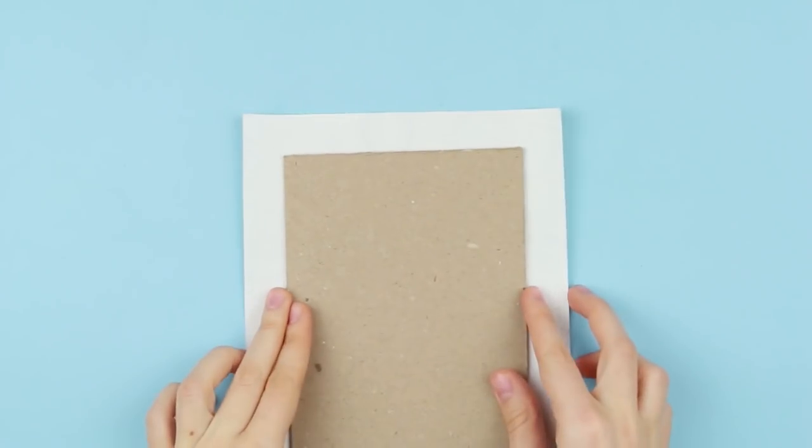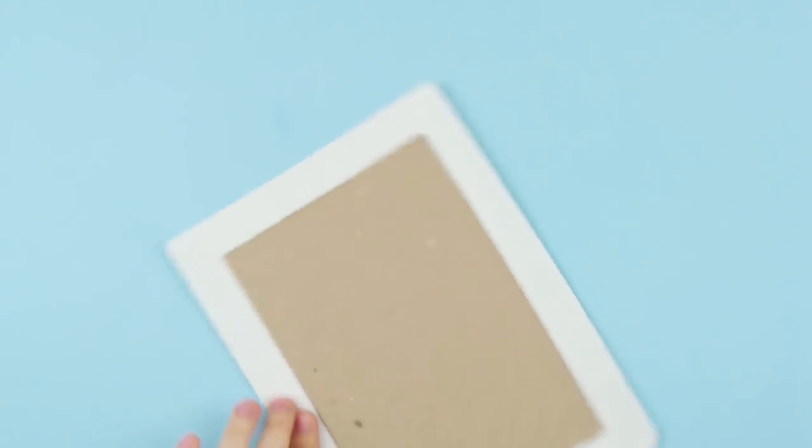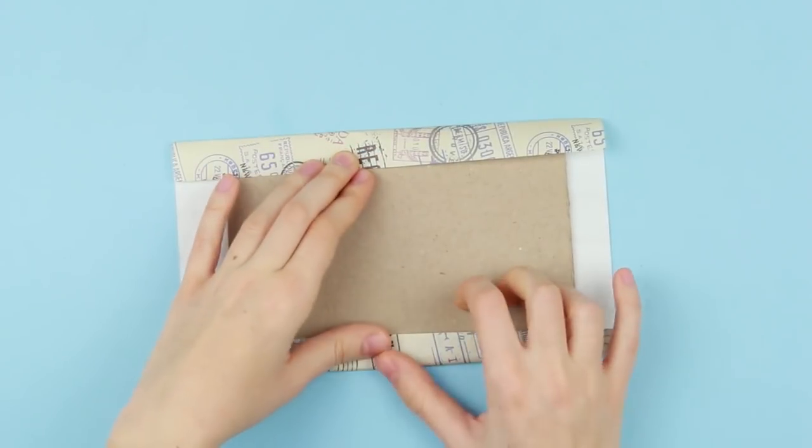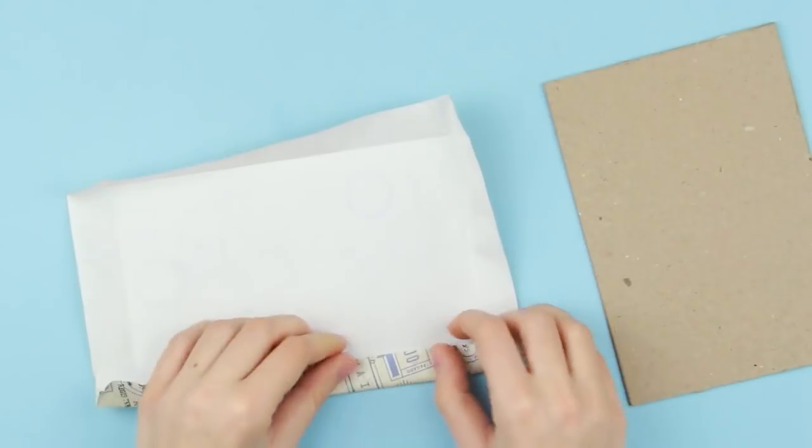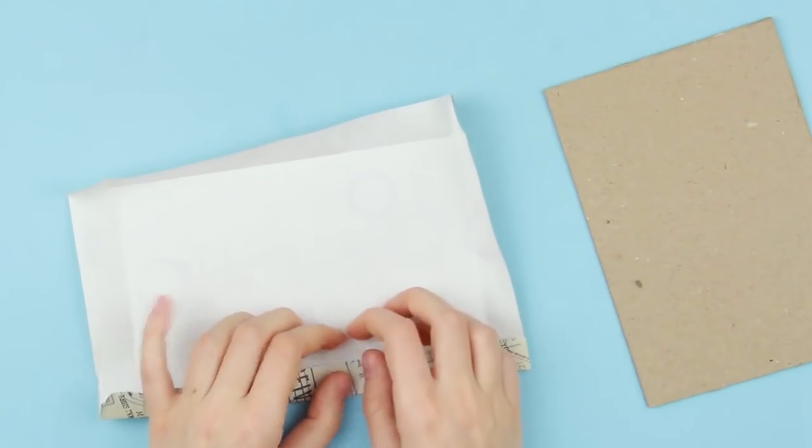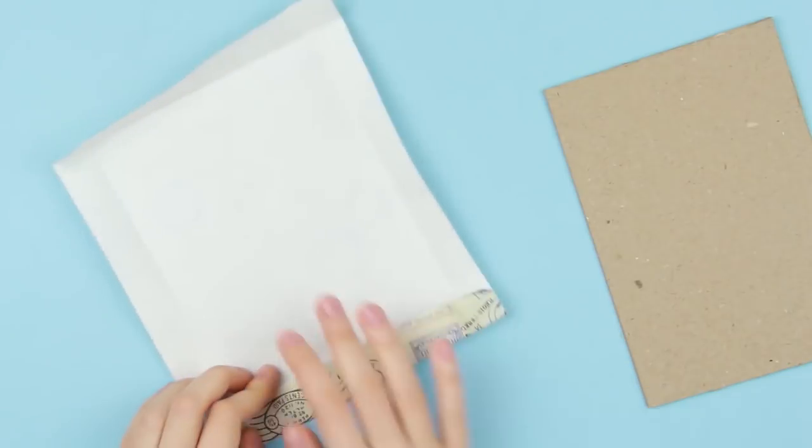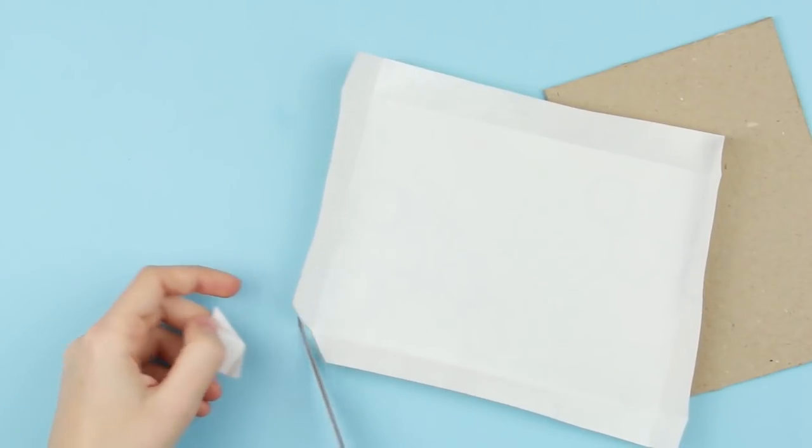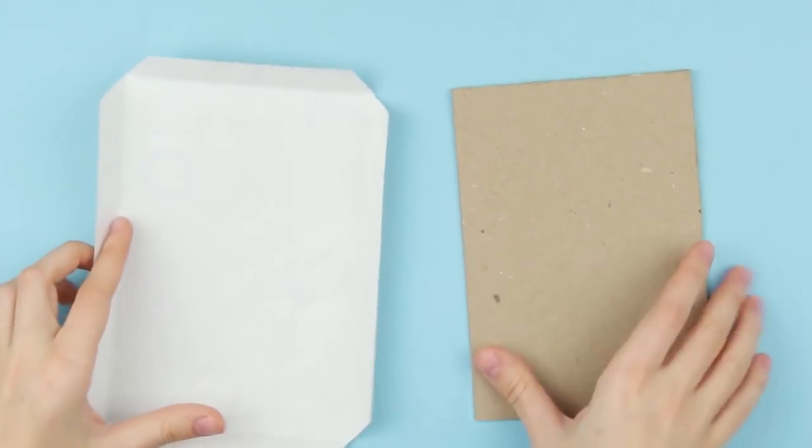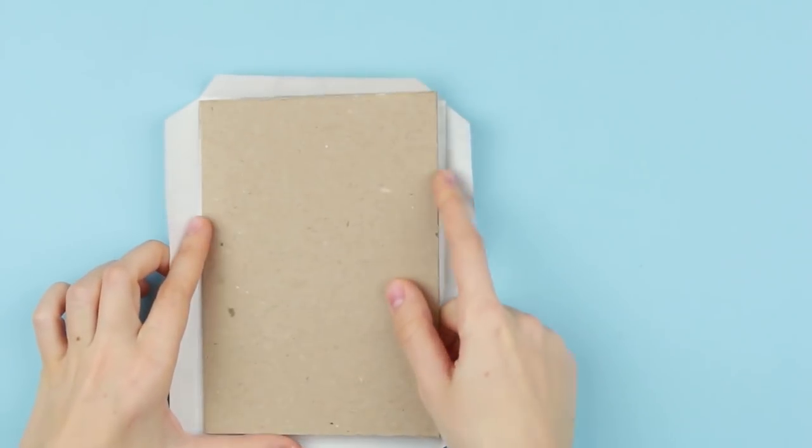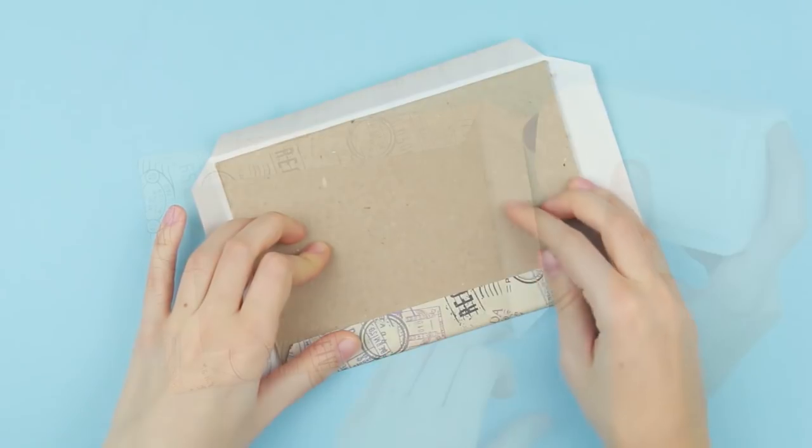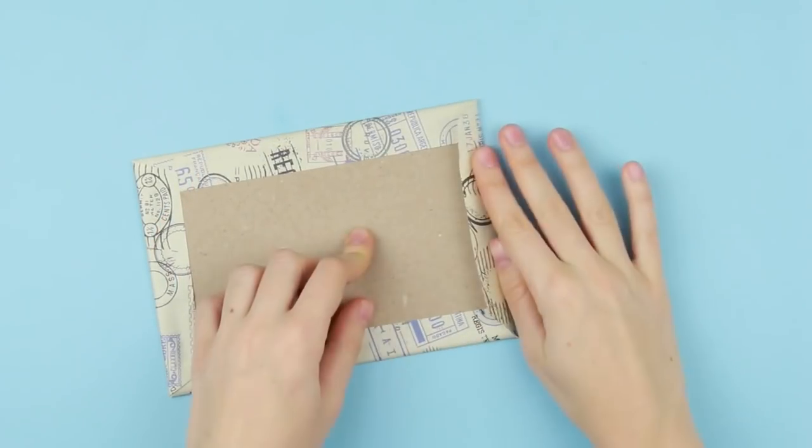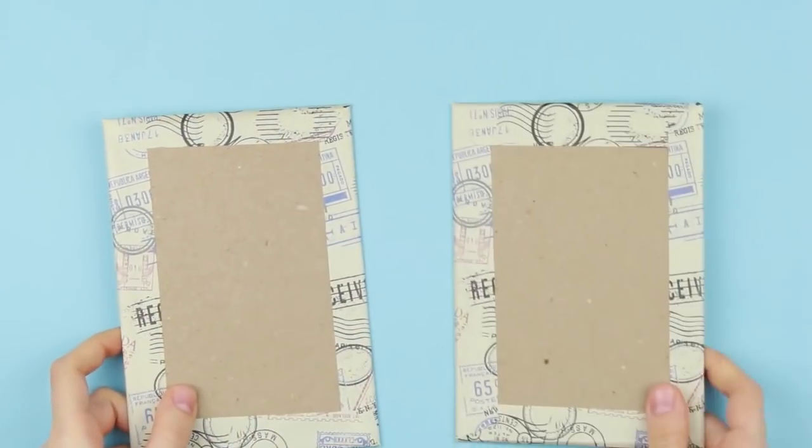Take thick cardstock to make a hard cover. Place it on the wrapping paper. Fold the paper to wrap the cardboard. Crease again. Cut off the corners. Put the cardstock in. Glue the paper and attach it to the cardboard.